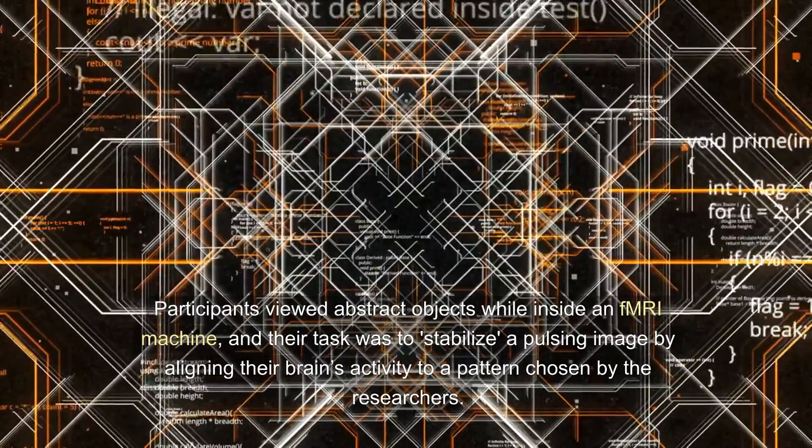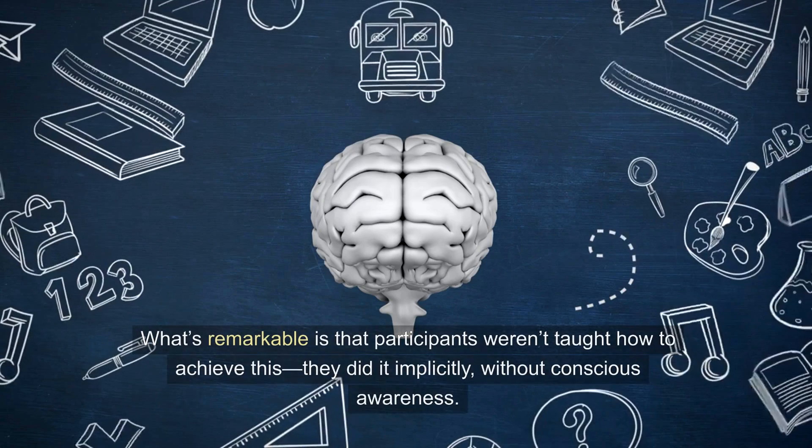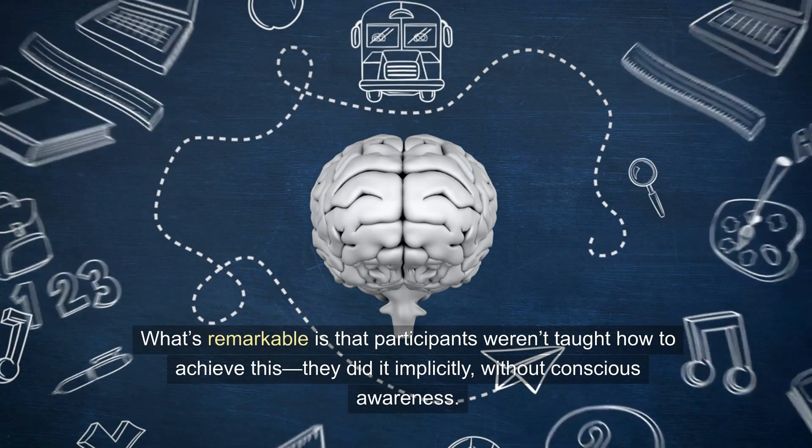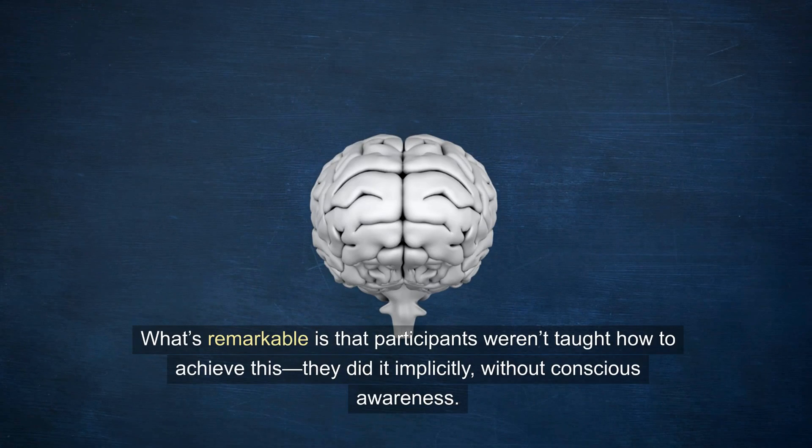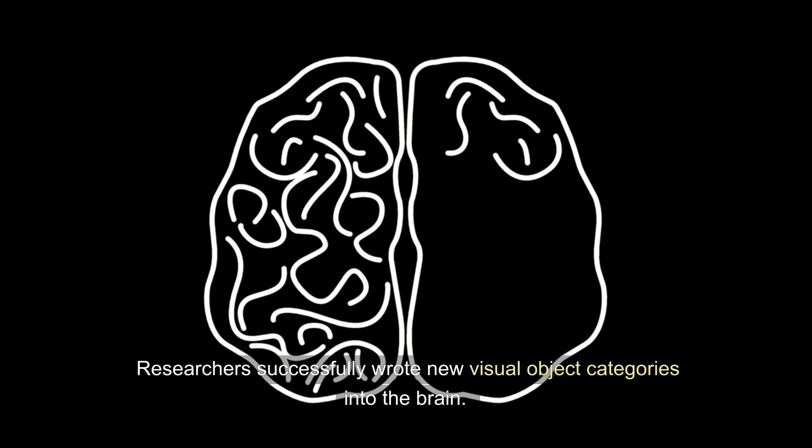What's remarkable is that participants weren't taught how to achieve this. They did it implicitly, without conscious awareness. The result: researchers successfully wrote new visual object categories into the brain.